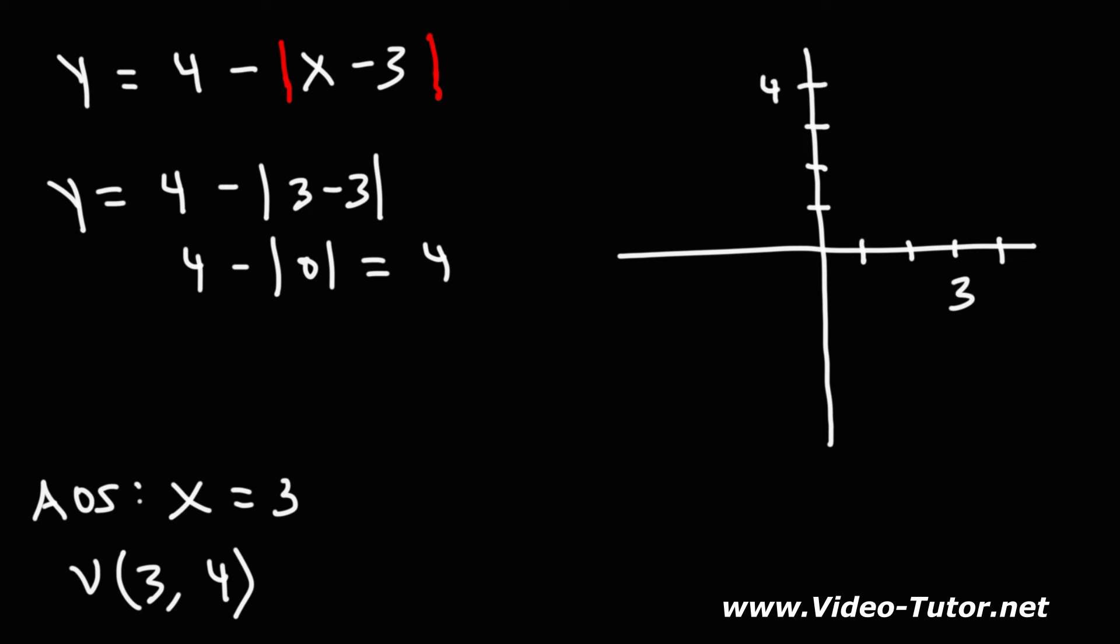So the vertex is at 3, 4, which is right here. Now, because we have a negative sign in front of the absolute value function, this graph is going to open downward. So it's going to have that general shape. And here is the vertex.